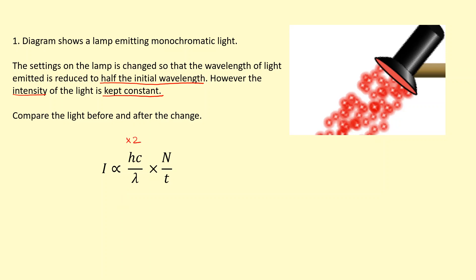So how do we keep the intensity constant? This is constant here as stated in the question. Well the only way to do this is to reduce the number of photons to half the initial amount because the 2 times a half will give us a constant amount of intensity.